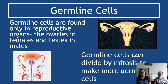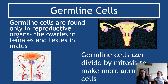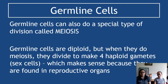That's essentially it for somatic cells. The second type we'll look at is germline cells. Germline cells are a special type of cell found only in reproductive organs - that's the ovaries in females where eggs are produced, and the testes in males where sperm are produced. Germline cells can make more germline cells; males can keep producing sperm for decades, so they need a supply of cells producing sperm. These cells will divide by mitosis to ensure plenty of germline cells remain available.